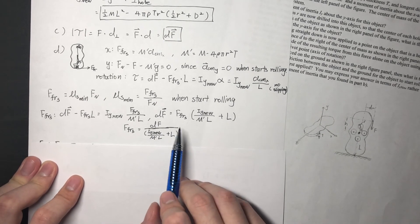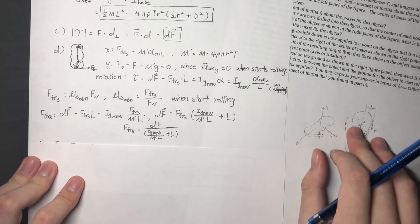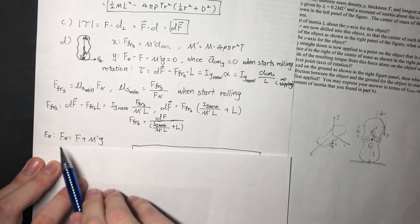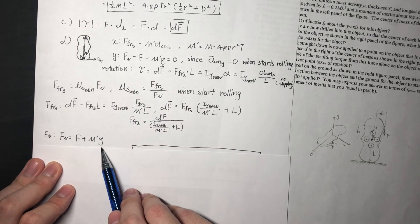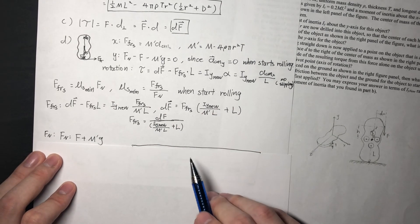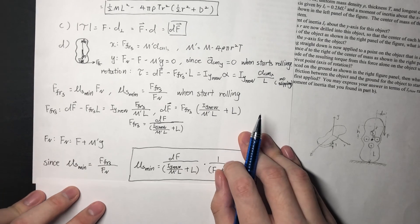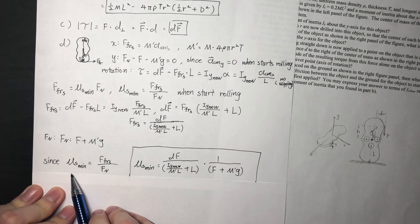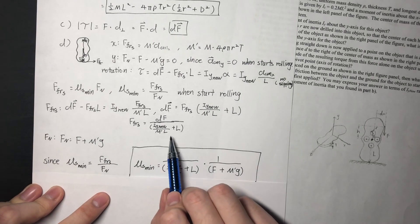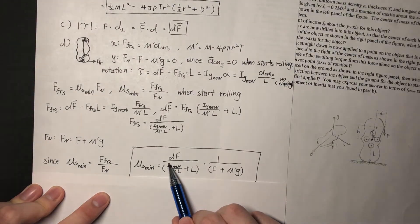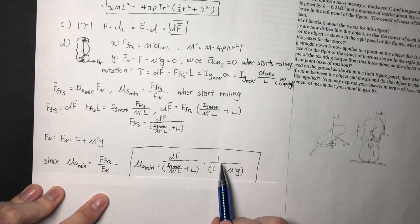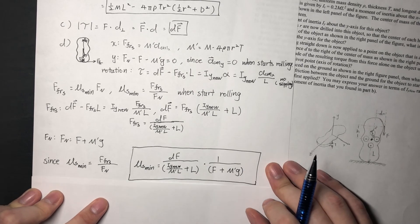Besides frictional force, we also need the normal force. From the y-direction equation, normal force equals F plus Mg. Knowing both frictional force and normal force, the minimum coefficient of static friction is frictional force divided by normal force: mu equals dF divided by the quantity (I_Y_new over mL plus L), all divided by (F plus Mg). That is our final answer.